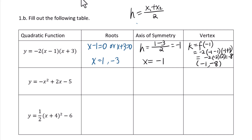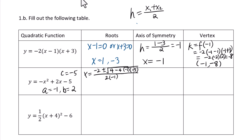For y equals negative x squared plus 2x minus 5, the vertex is (1, negative 4) — we will verify. We use the quadratic formula for the roots: a equals negative 1, b equals 2, c equals negative 5. So x equals negative 2 plus or minus square root of (4 minus 4 times negative 1 times negative 5), over 2 times negative 1.